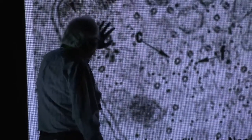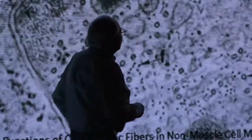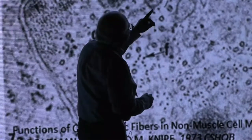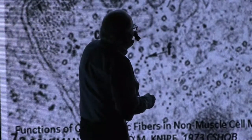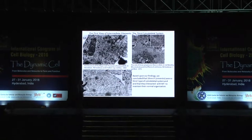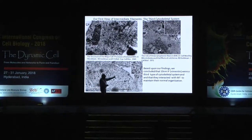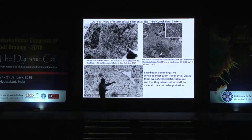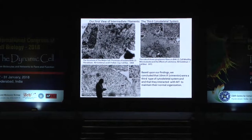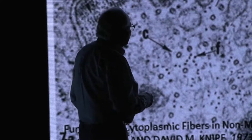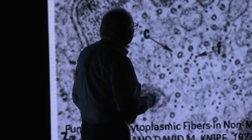Actin and microtubules have been studied extensively for many years. Intermediate filaments, though, have not had the same attention. We were convinced, based upon our findings early on, that 10-nanometer intermediate filaments were a third type of cytoskeletal system, and that they interacted with microtubules to maintain their normal organization. And this was way back in the early 1970s.